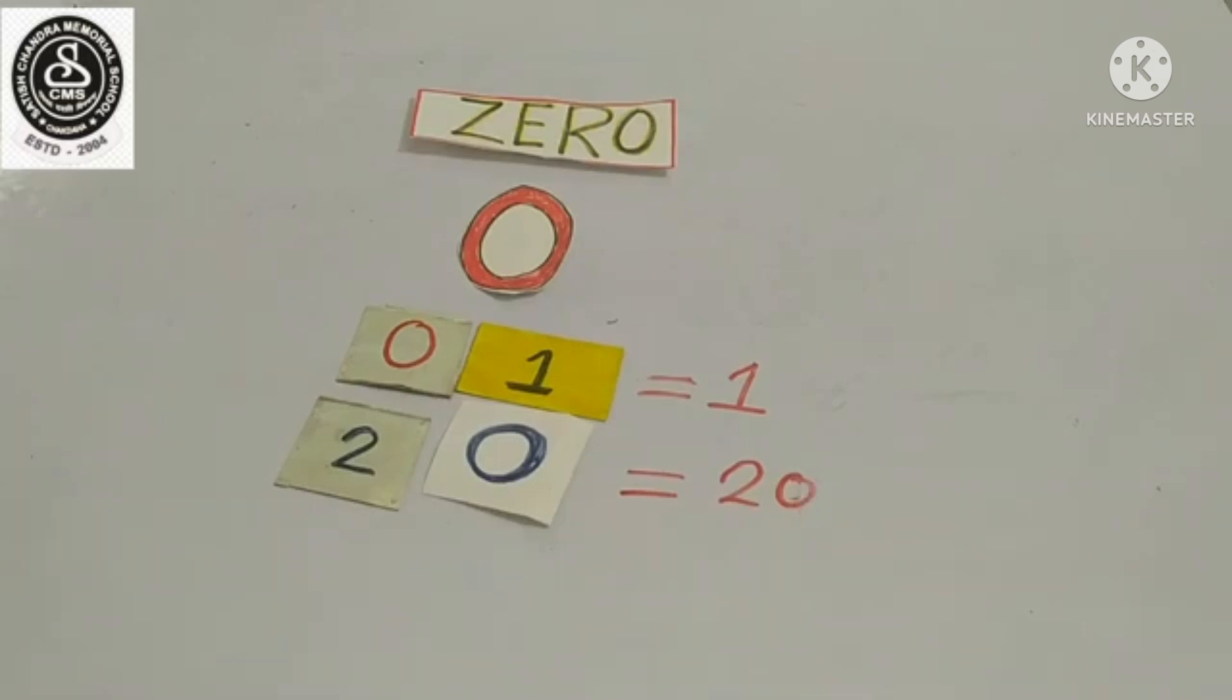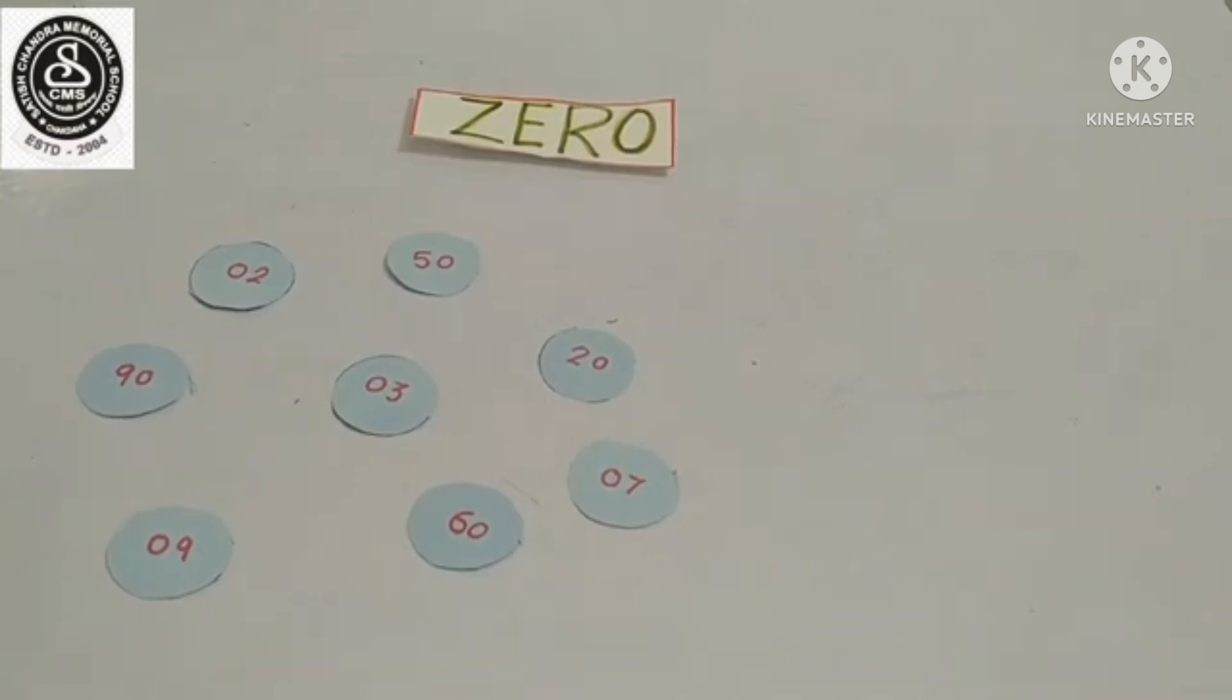So, now, we will do one activity. Here, you can see I have written some numbers. So, my first number is zero nine. Zero nine equals only nine. But my second number is nine zero, ninety. So, ninety equals 90.